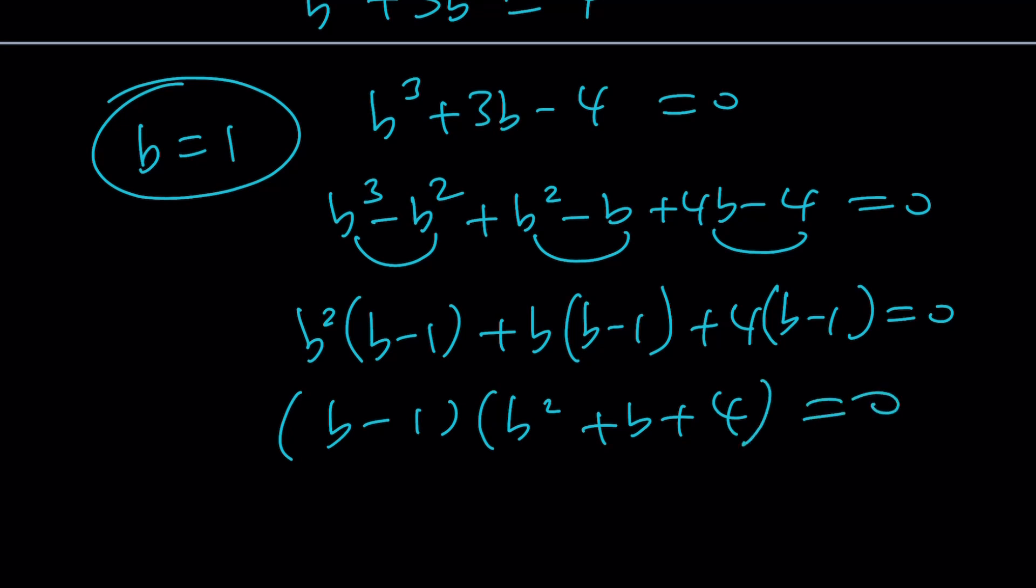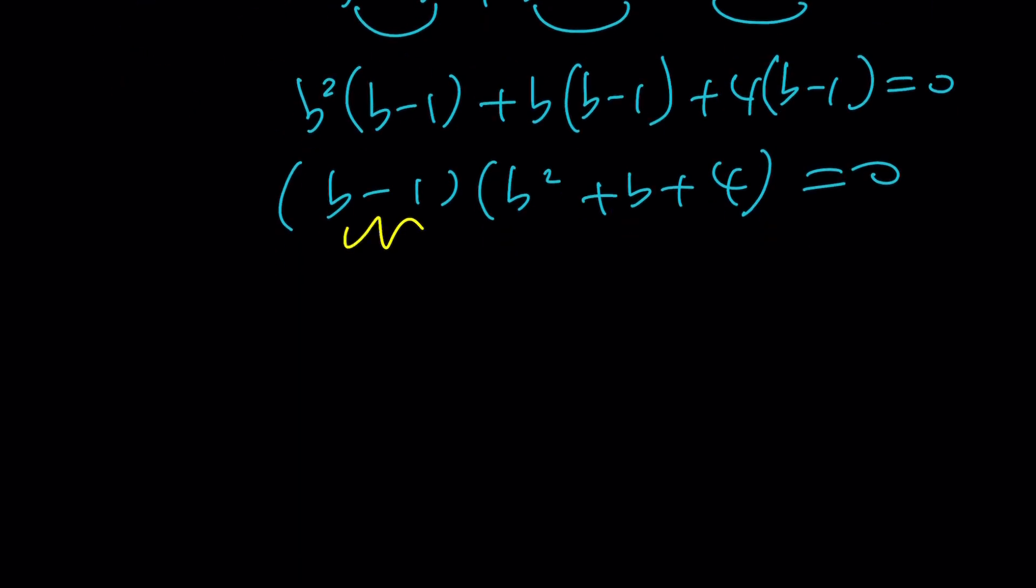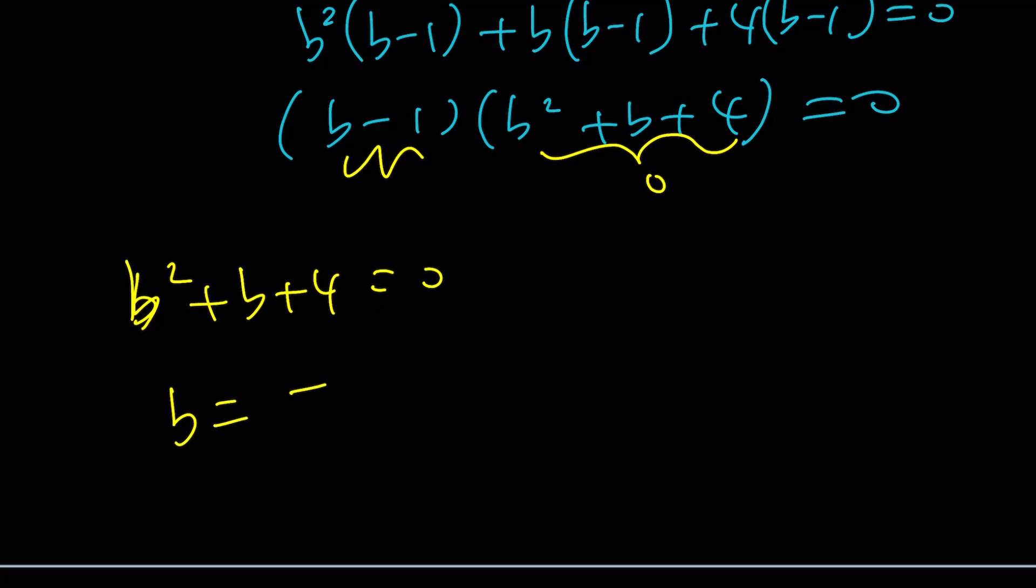We're getting other solutions. Nice. We already know b equals 1. And by the way, I'll tell you what it is. But from here, we should get something else. Use the quadratic formula because we have a formula. negative b plus minus the square root of b² minus 4ac, which is 16, over 2. And that is negative 1 plus minus root 15i divided by 2. This is b.